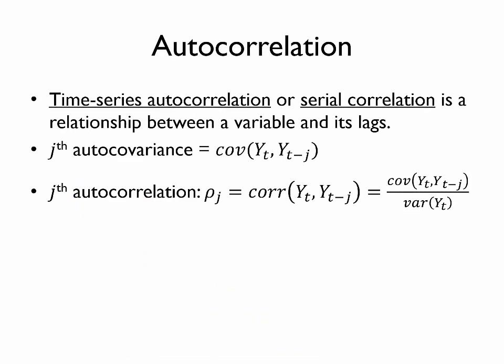Time series autocorrelation, also called serial correlation, is a relationship between a variable and its lags — that is, the values of that same variable observed in an earlier time period. More technically, the jth autocorrelation is the covariance of some variable y observed at time t, and that same variable y observed j periods before time t. In other words, j refers to the number of periods that we have lagged that variable. Similarly, the jth autocorrelation, also denoted with the Greek letter rho, is the correlation between y and j lags of y.